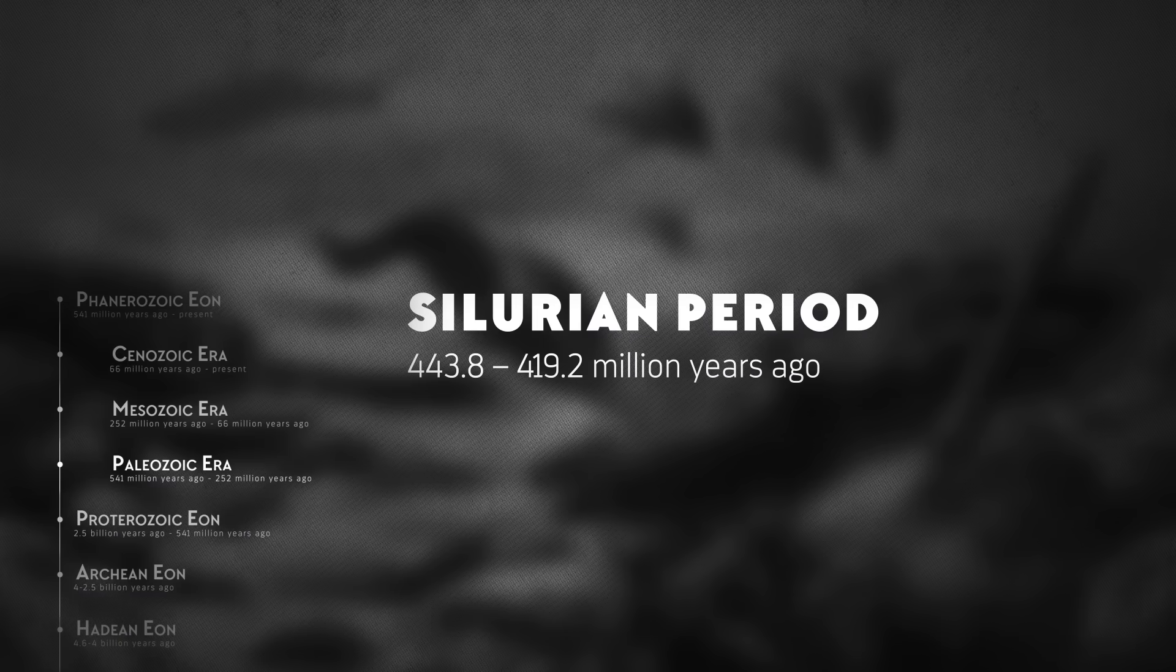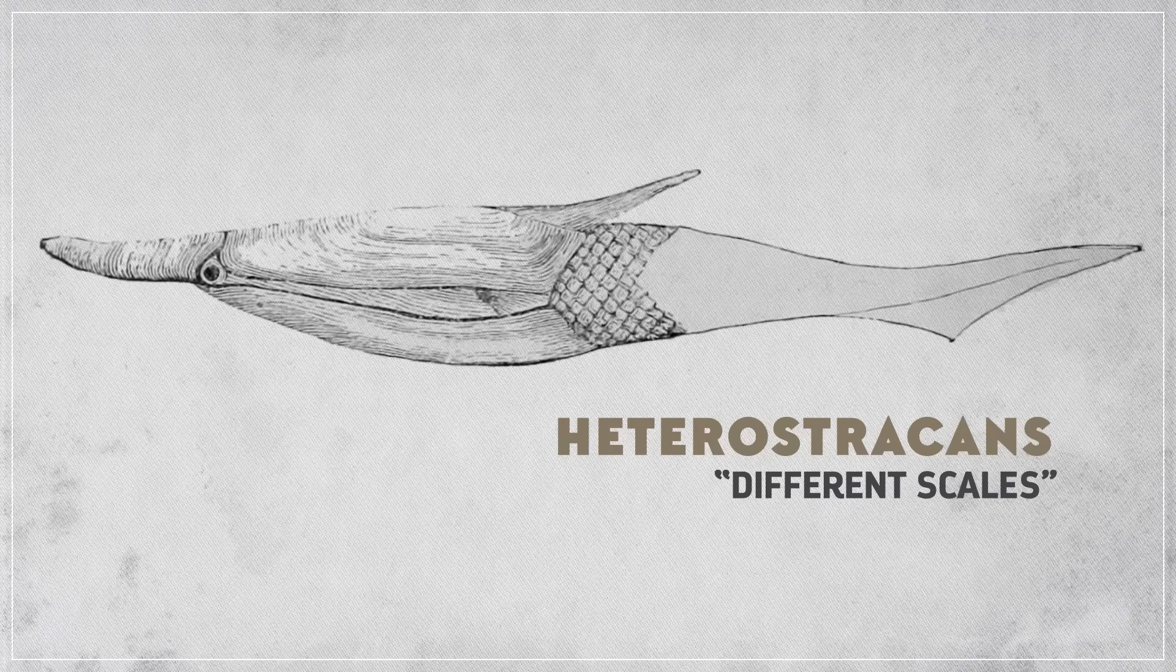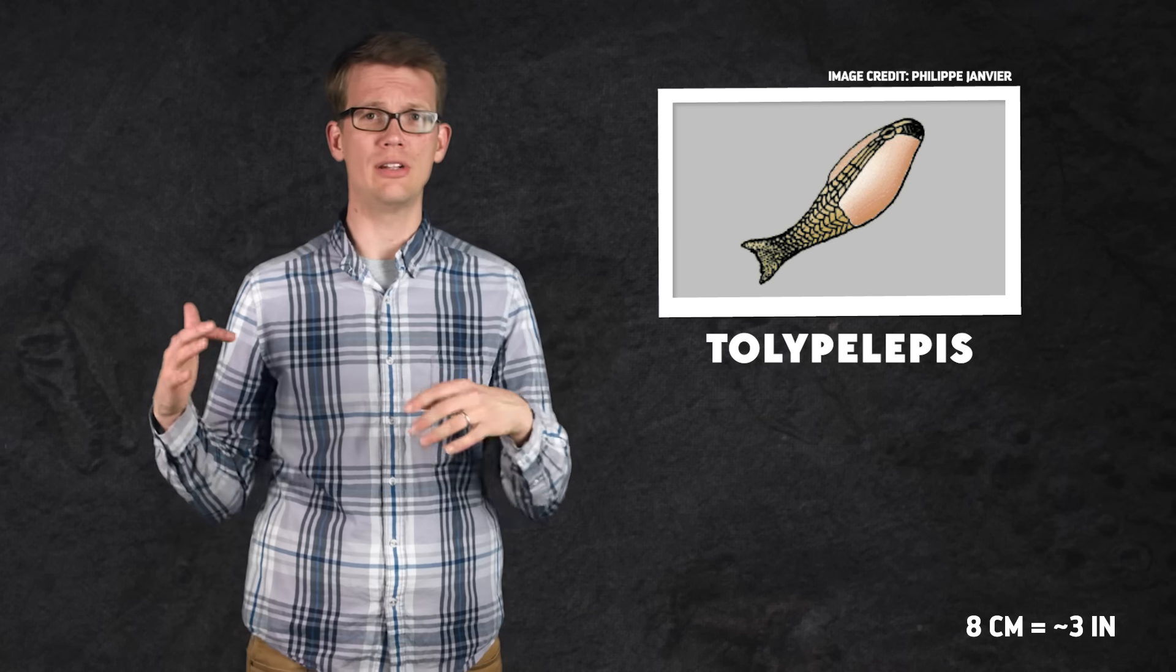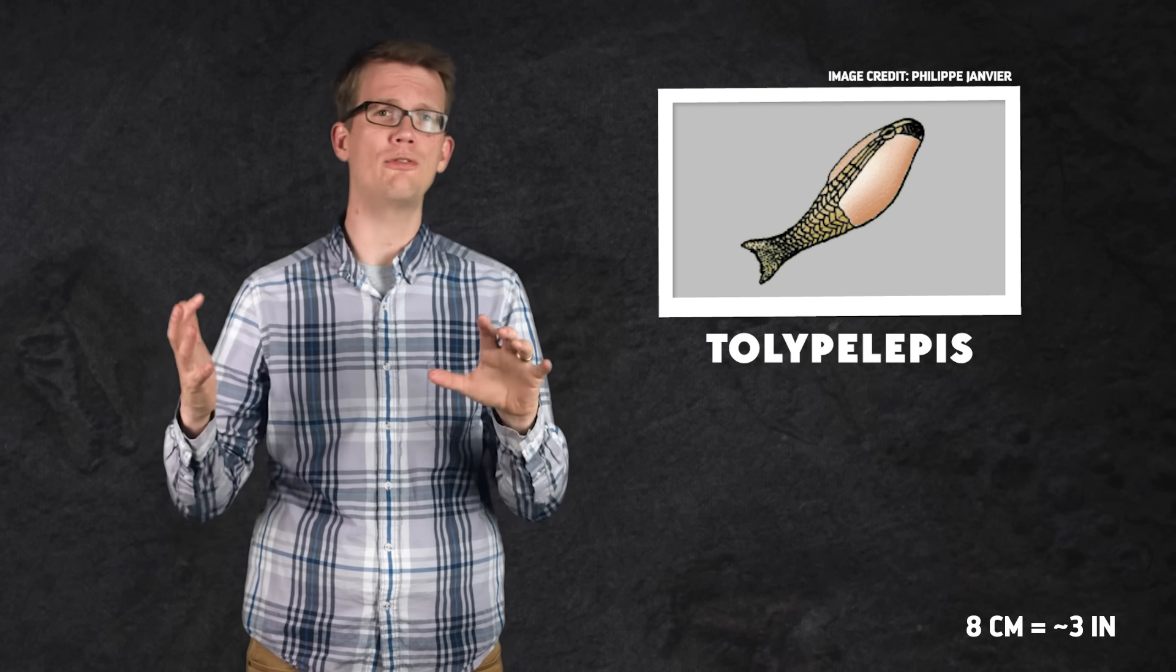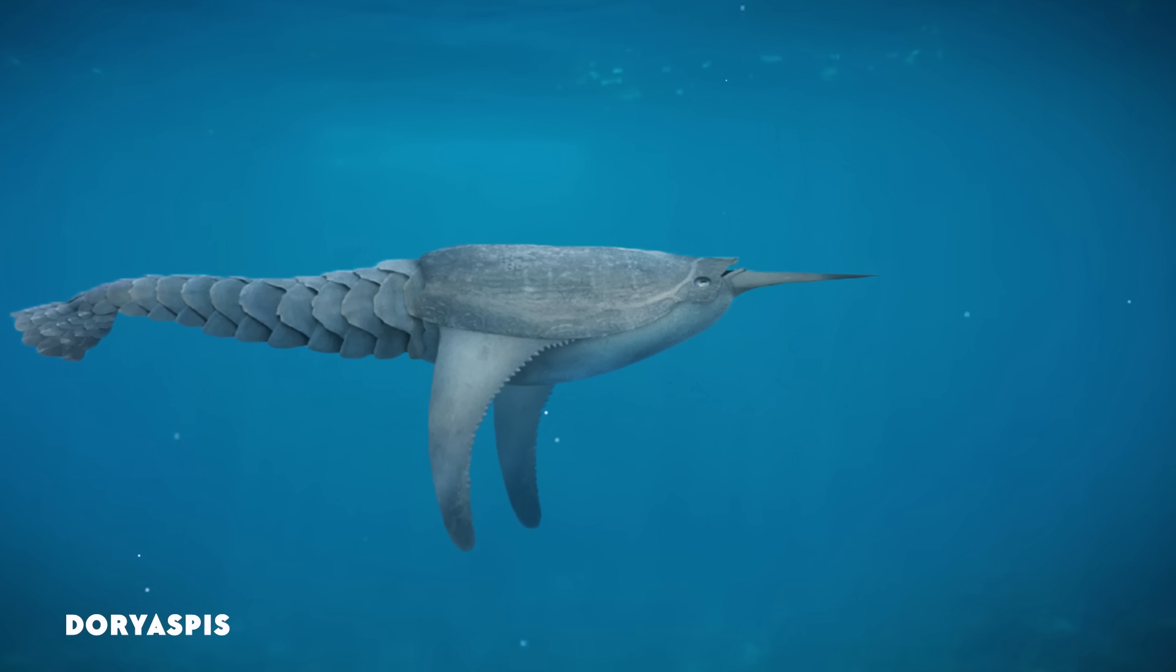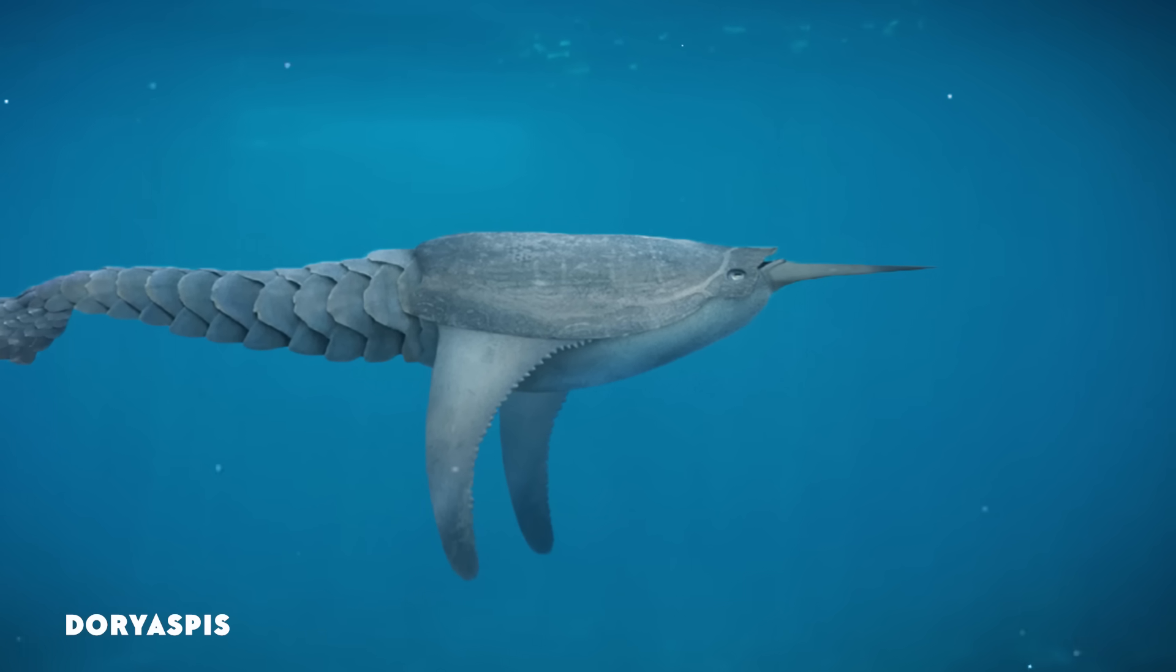The period that came next, the Silurian, saw the evolution of armor in many groups of fish all around the same time. One such group was the Heterostracans, whose name means different scales. They too looked like small armored ovals with thick fleshy tails. Talipolepis, for example, swam around Latvia 420 million years ago. It was only about eight centimeters long, but its armor was especially beautiful, made of intricate ridged interlocking scales. Other Heterostracans had fused plates on their heads with diamond-shaped or elongated scales covering their tails.